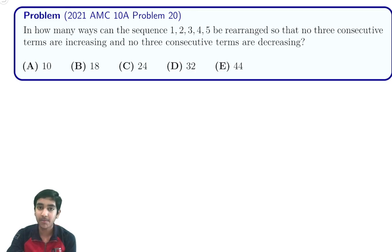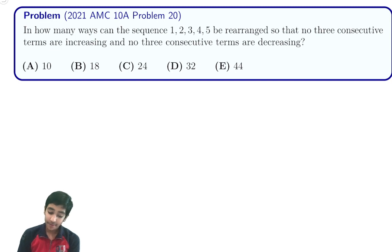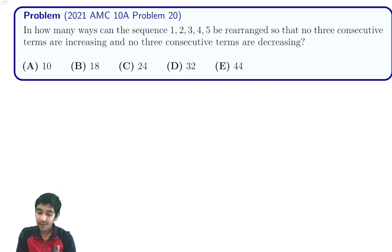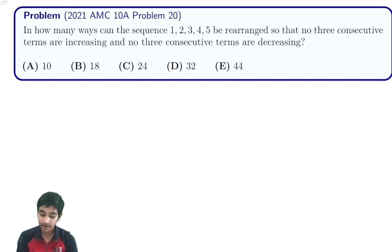Hi everyone. In this video, we're going to explore the 2021 AMC 10A problem number 20. This problem is very easy to make a mistake on, so you definitely want to be careful. We basically want to find how many ways the sequence 1, 2, 3, 4, 5 can be rearranged so that no three consecutive terms are increasing and no three consecutive terms are decreasing.